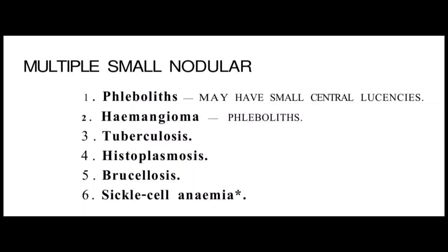Splenic calcification depends upon its size, shape, density, and number. If within the splenic parenchyma it appears as multiple small nodular forms, it could be due to phleboliths, which is a benign condition seen in hemangiomas, and also in tuberculosis. In post-tuberculosis conditions, you will see multiple tiny calcific foci within the splenic parenchyma.